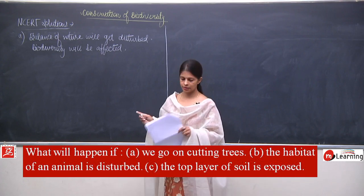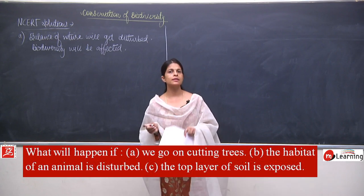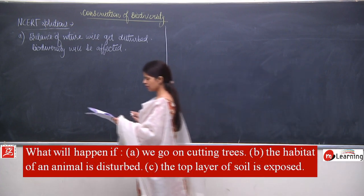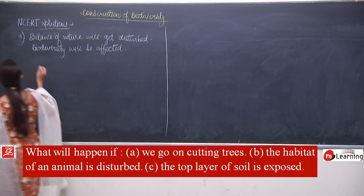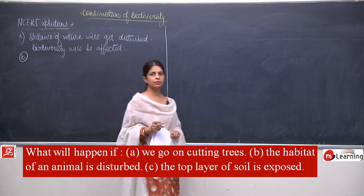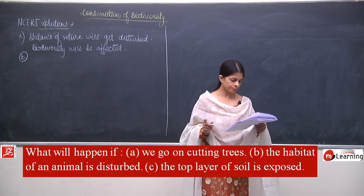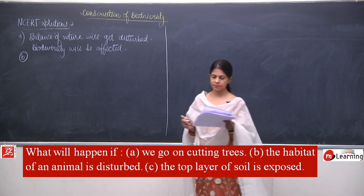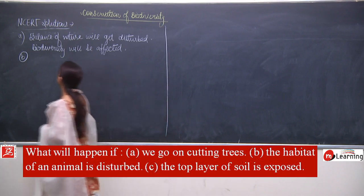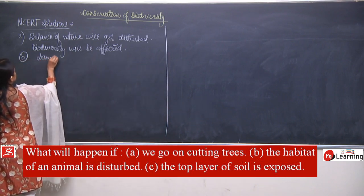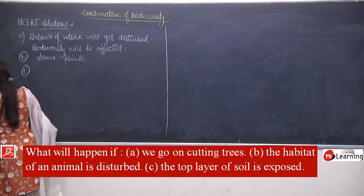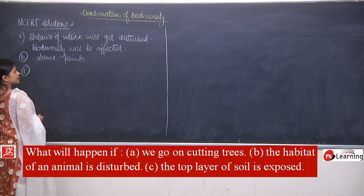If the top layer of soil is exposed, it will lead to desertification. For part B, the habitat of an animal being disturbed means food and everything will be reduced — we just discussed this. The same points apply.